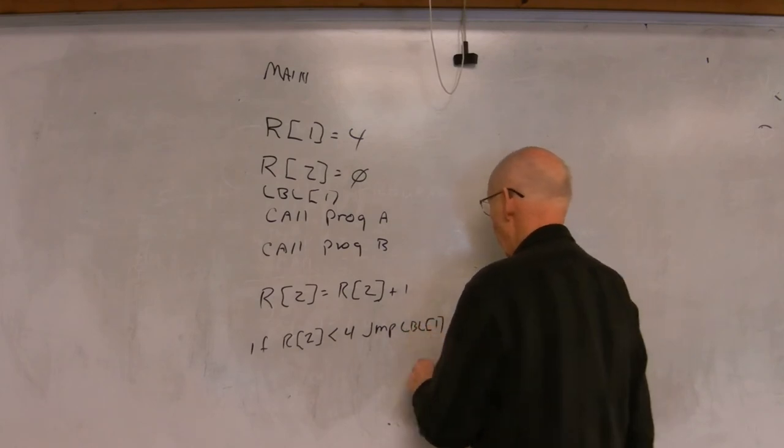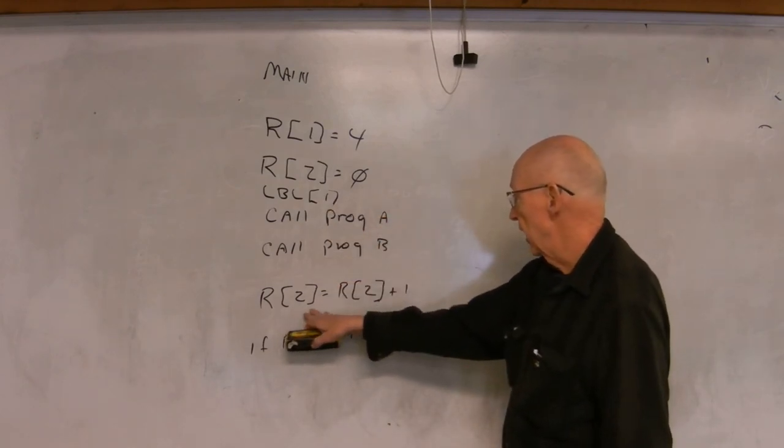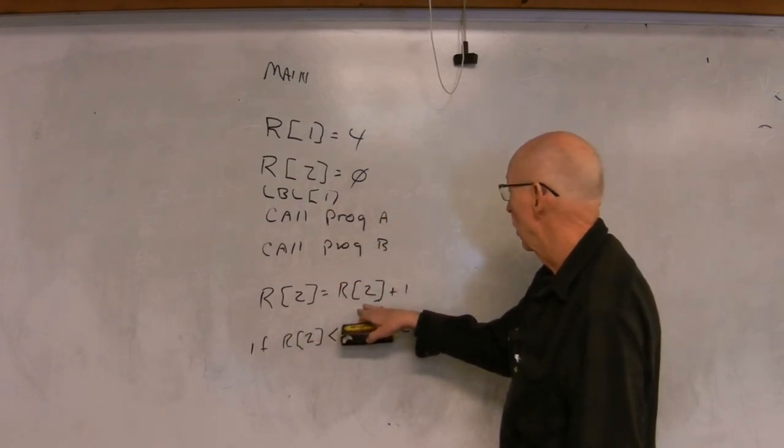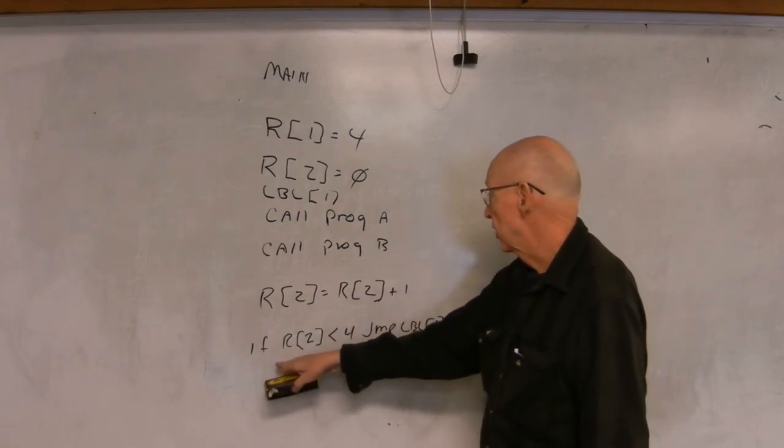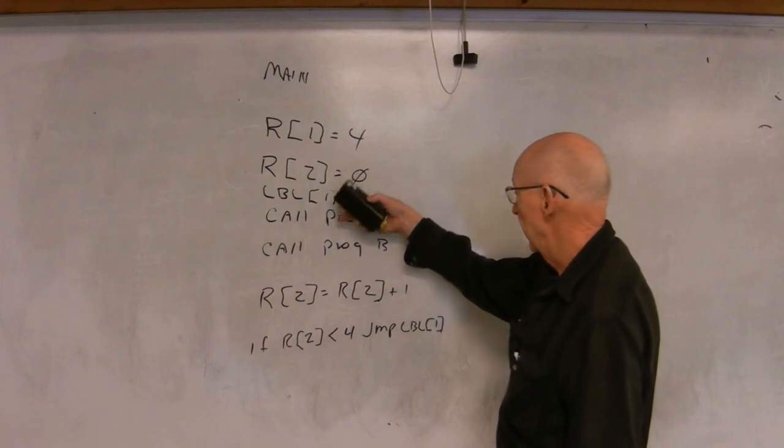So we call these three programs, we increment the value of R2, and then we test it. If it's less than four, go back to label one and execute it again.